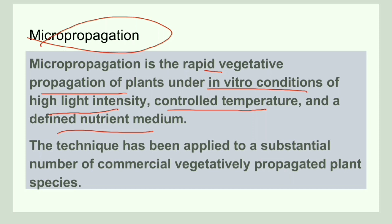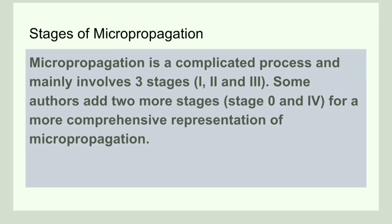Next, we will discuss the different stages of micropropagation. Micropropagation can be divided into three stages: Stage 1, 2, and 3. Some researchers add two more stages — Stage 0 as well as Stage 4.